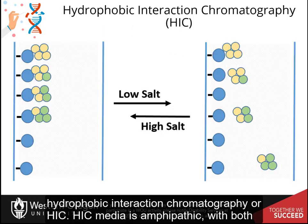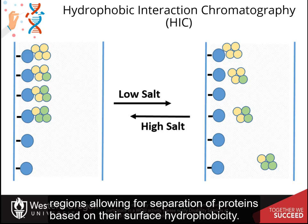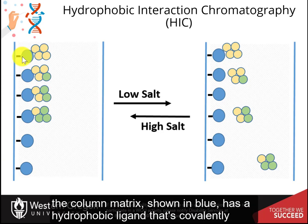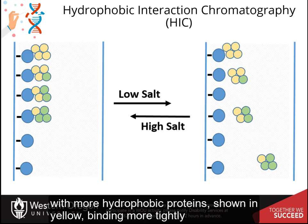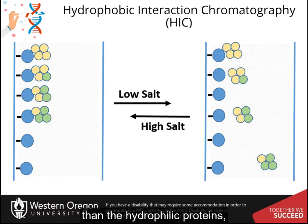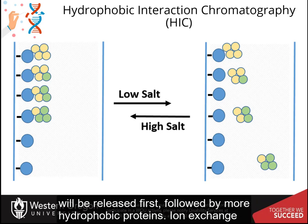The next system is hydrophobic interaction chromatography, or HIC. HIC media is amphipathic with both hydrophobic and hydrophilic regions, allowing separation of proteins based on their surface hydrophobicity. The column matrix has a hydrophobic ligand covalently attached. In high salt concentrations, proteins bind to the matrix with differing affinity, with more hydrophobic proteins binding more tightly than hydrophilic proteins. When the salt concentration is decreased, more hydrophilic proteins are released first, followed by more hydrophobic proteins.